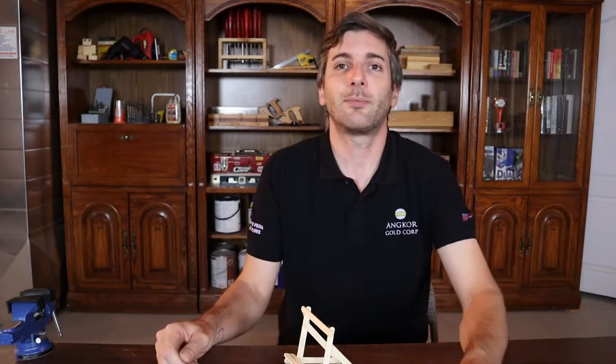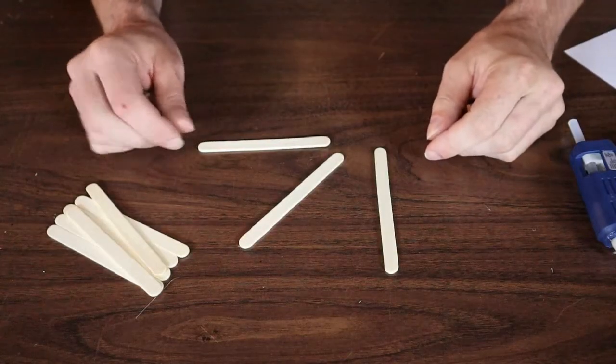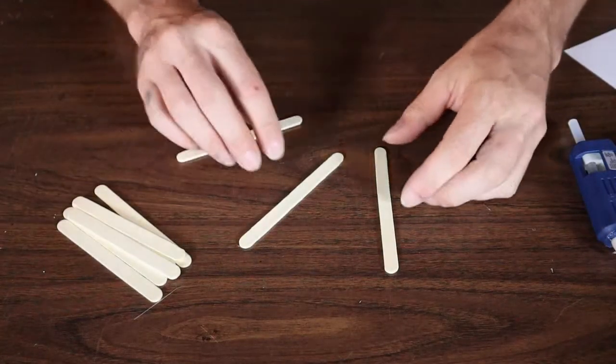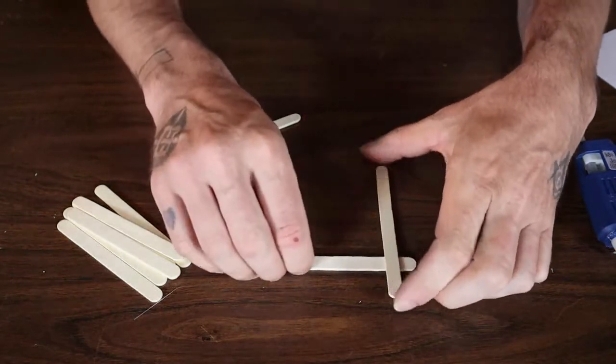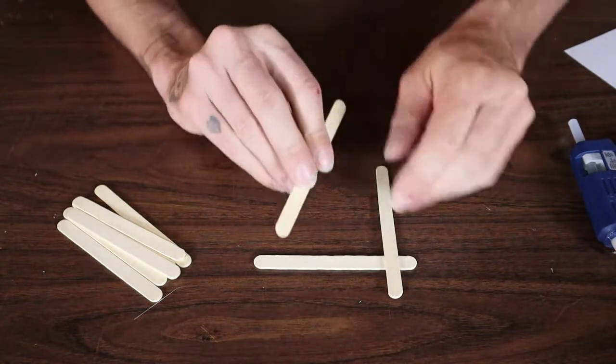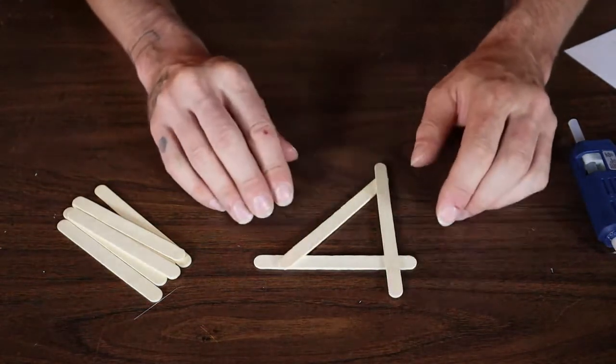So for this little phone holder you're going to need nine popsicle sticks, and the first thing you want to do is make the sides. To do that you're going to have two kind of like this and then the brace piece on the back, so you just want to glue up two sides that look like this.